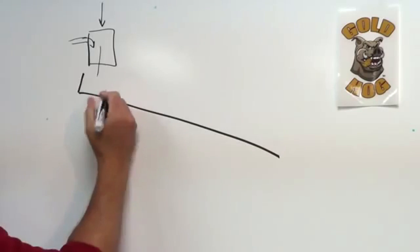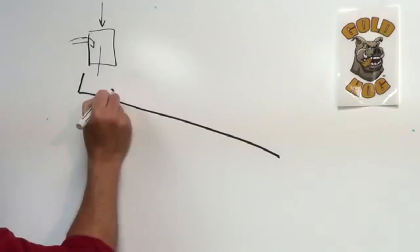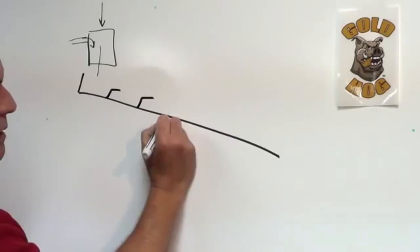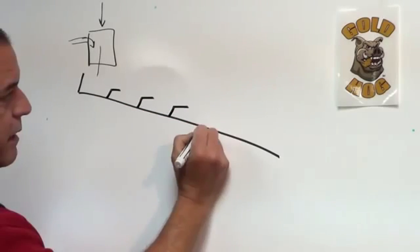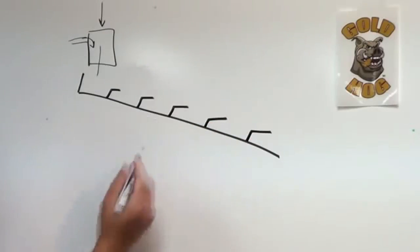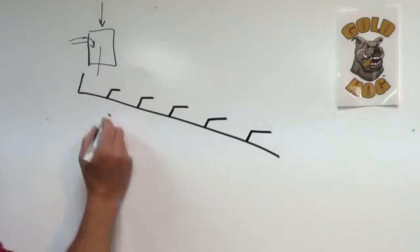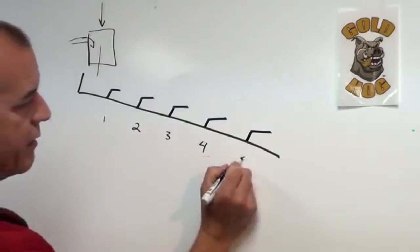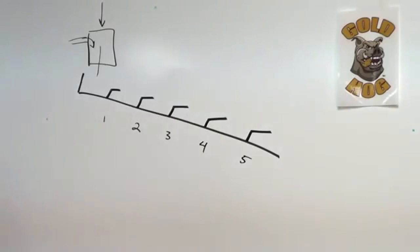What you're going to have is a series of riffles. So let's say you have a riffle here, riffle here, riffle here, and a riffle here. And we're going to call these R1, R2, R3, R4, and R5, and it goes down.